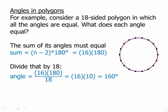And here's the actual shape. An 18-sided polygon in which all the angles are equal. Notice that it looks awfully circle-like and that is true of many of the higher polygons that have all equal angles and all equal sides.